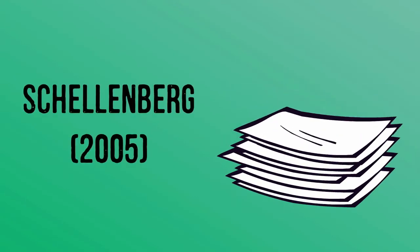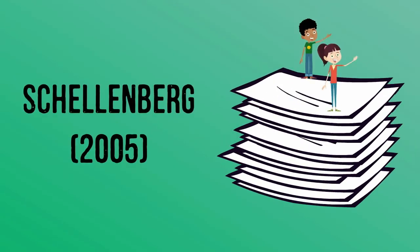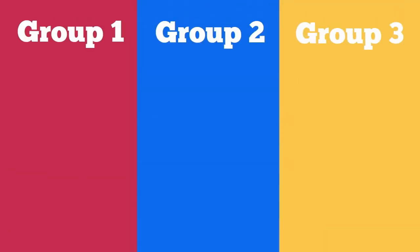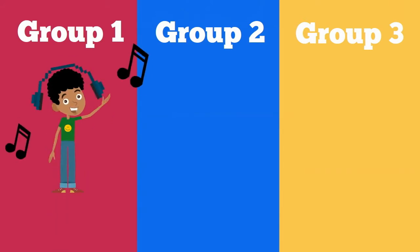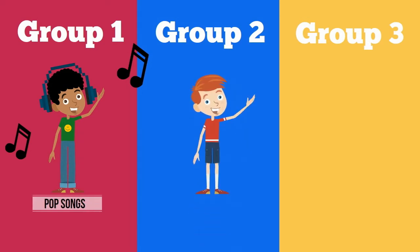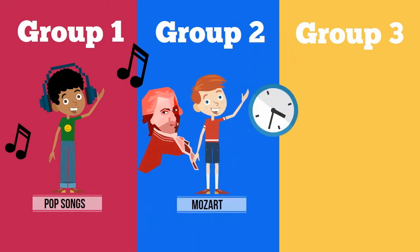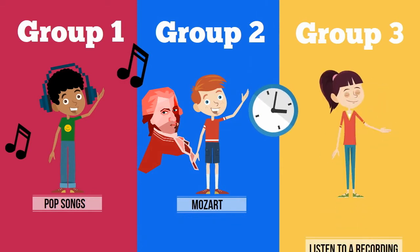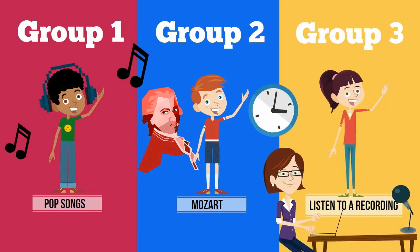A study by Schellenberg investigated this hypothesis with a sample of 10 and 11-year-olds. They were divided into three groups with different listening conditions and required to complete simple tasks. The first group would do the task after listening to a series of pop songs. The second group would do the task after listening to 10 minutes of Mozart. And the third group would listen to a recording of someone discussing the experiment with a journalist.